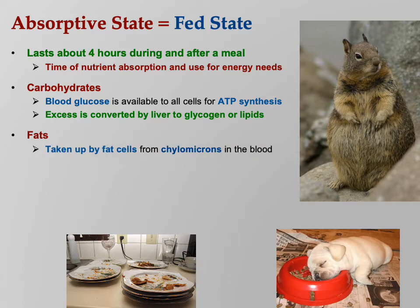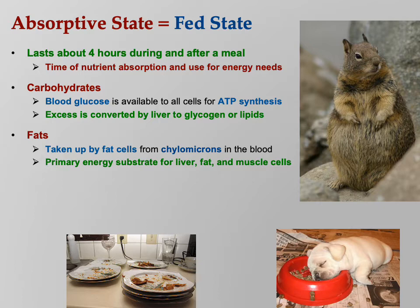Fats are taken up by fat cells from chylomicrons in the blood. Remember, they were absorbed into the lacteals, dumped through the right lymphatic duct and thoracic duct into the subclavian veins. They're a primary energy substrate for liver, fat, and skeletal muscle cells — those cells are all very happy to use fats for energy, whereas the brain wants glucose — that's glucose sparing.